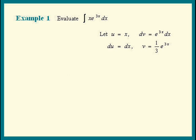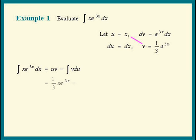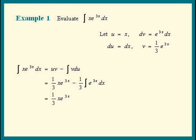Next, we substitute all this into our integration by parts formula. The integral of x times e to the 3x dx is the integral of u dv, which by the formula equals uv minus the integral of v du. Substituting everything in: u times v is x times 1 third e to the 3x, minus the integral of v du. Pulling the 1 third out, we're left with the integral of e to the 3x dx, giving us 1 third x e to the 3x minus 1 ninth e to the 3x plus C.